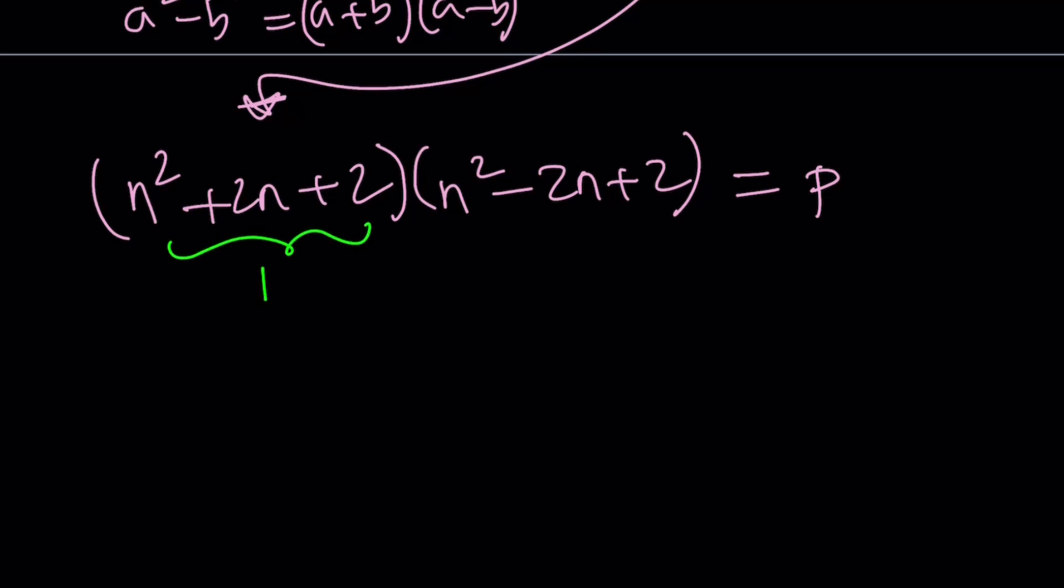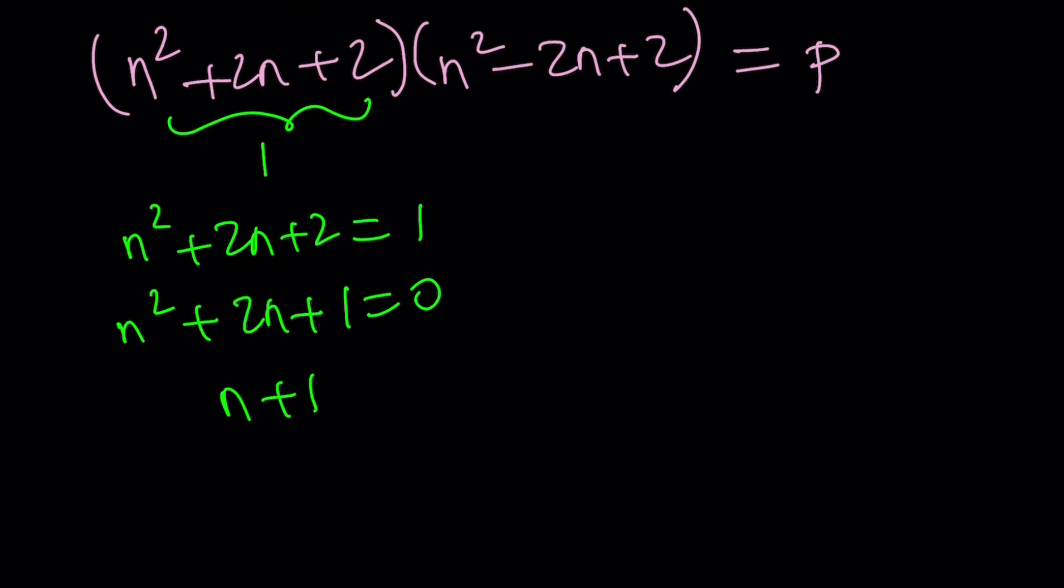How about starting with the first one? So what if this equals 1? From here, we get n squared plus 2n plus 2 equals 1. And then we can go ahead and subtract 1 from both sides. And we get n squared plus 2n plus 1 equals 0. This gives us n plus 1, quantity squared equals 0. And at the end, we get n equals negative 1.